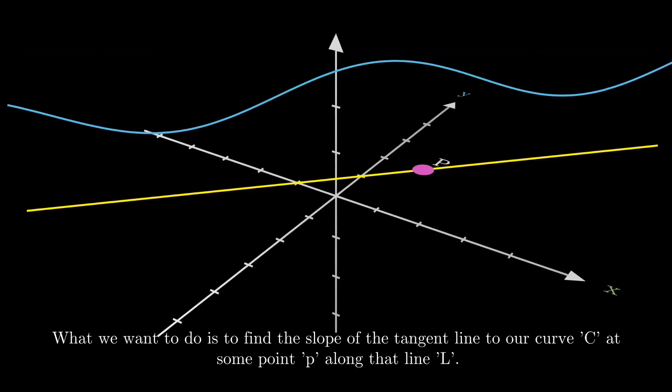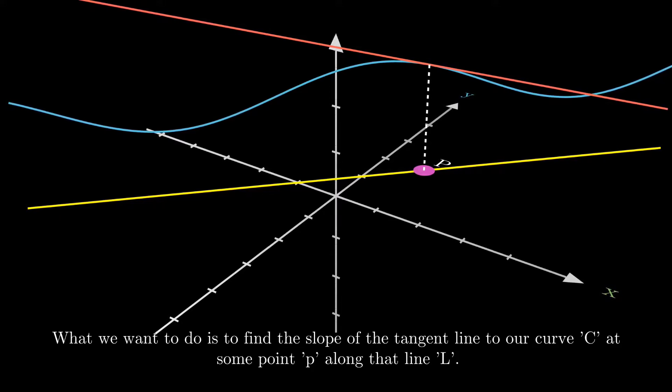What we want to do is to find the slope of the tangent line to our curve C at some point P along that line L.